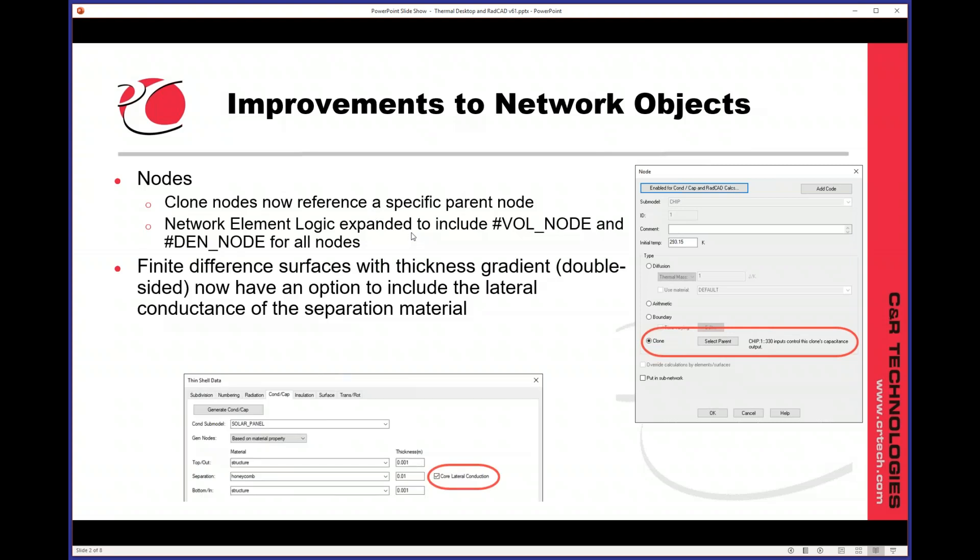With finite differences with thickness gradient, most of you will know these as double-sided surfaces. We now have an option to include the lateral conductance in the separation material. You can see the checkbox here. If you don't check that box, that's going to be the default is off. Then it'll work like it used to. But if you want to include that material in the lateral conduction, all you have to do is check that box.